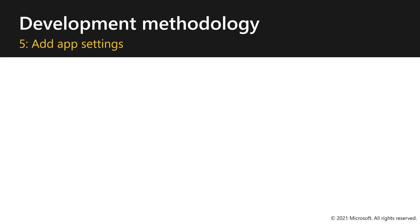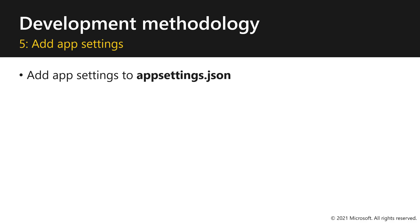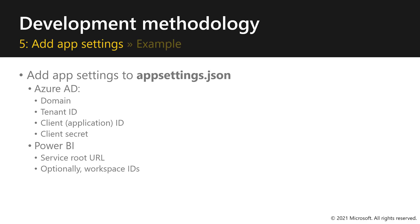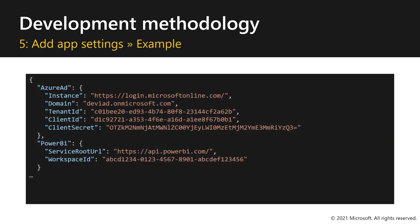Here we are at stage five of the development methodology: adding app settings. We need to add our app settings to the app settings JSON. For Azure AD, you will need to add your domain, tenant ID, client application ID, and client secret. For Power BI, you will need to add the service root URL and optionally the workspace IDs. Here's what an app settings file might look like, including values for all the settings just mentioned.